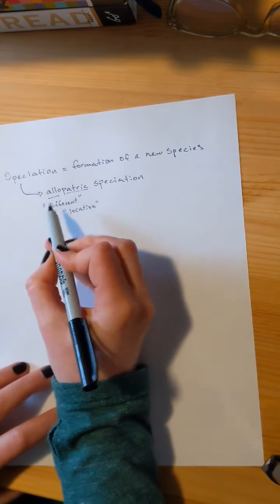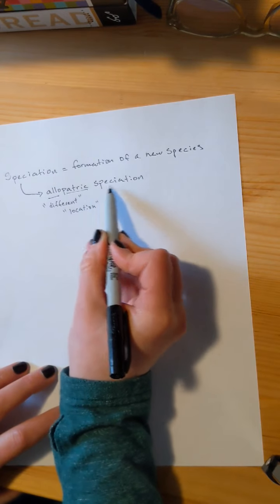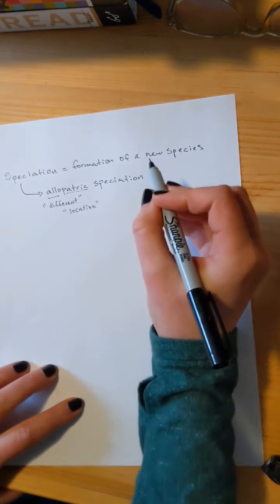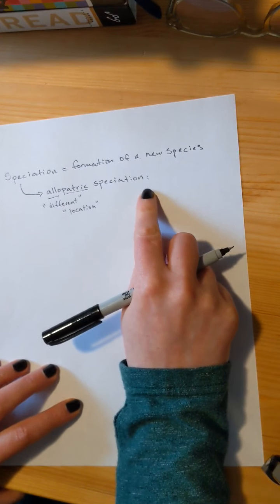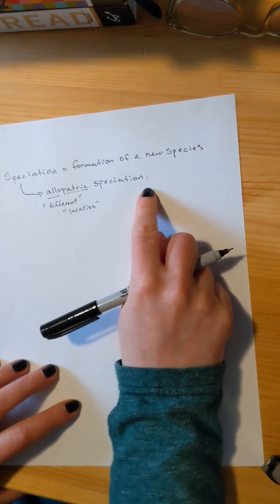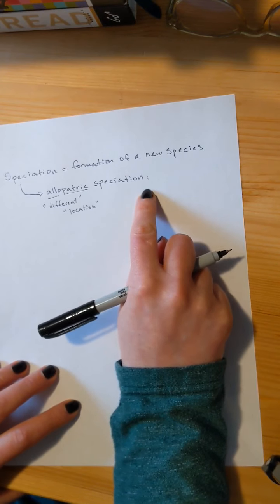That's actually the root of the word patriot. You've got strong feelings about a place. You're a patriot, you like your location. So allopatric means different location speciation.